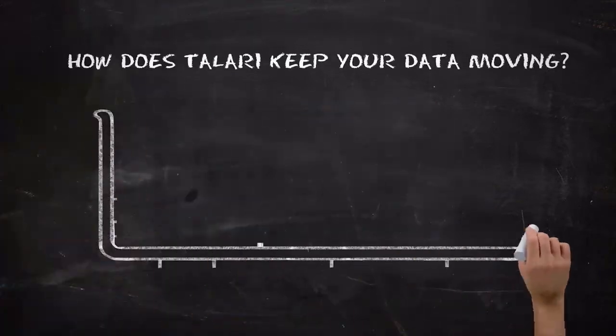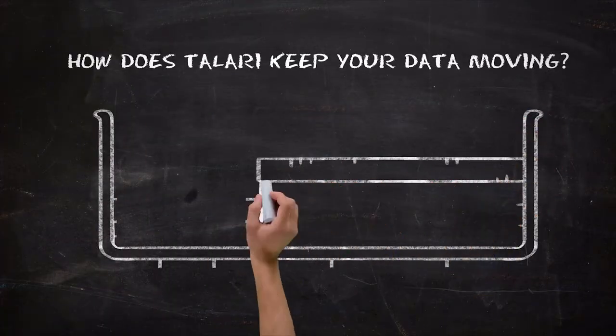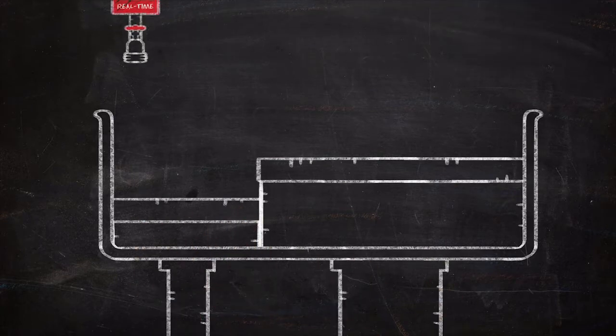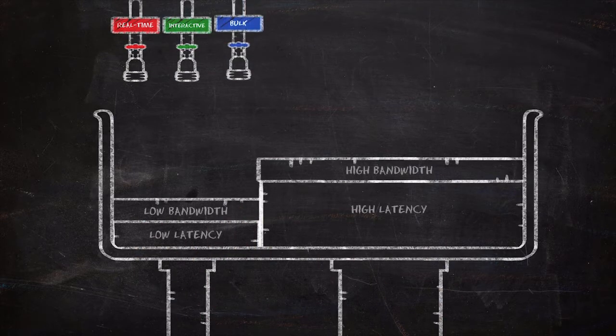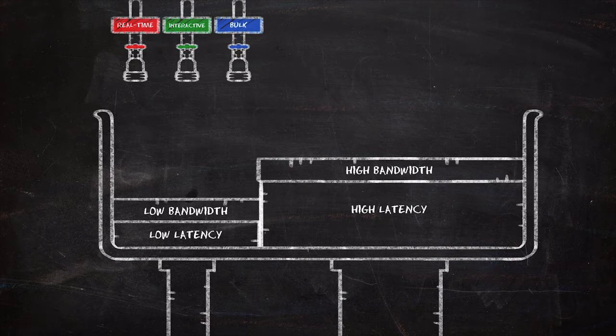Let's explore how Tulare ensures your data keeps moving. Imagine this container is a network that can be filled with different application traffic. In the container, we have bars that represent the latency and the bandwidth of each network's ability to transmit across the WAN.